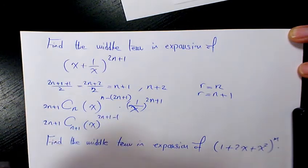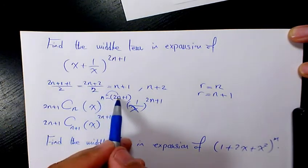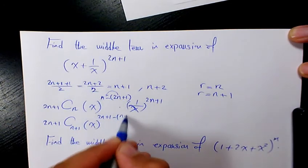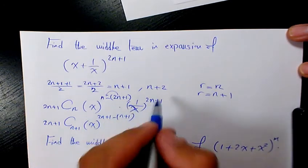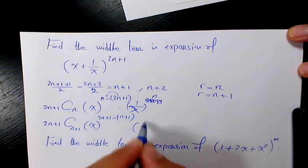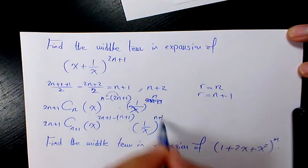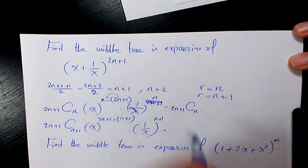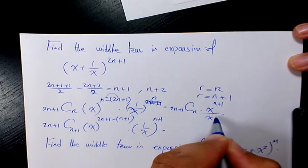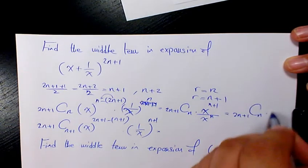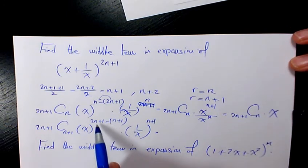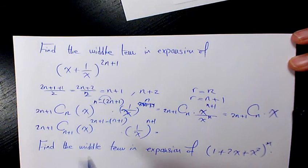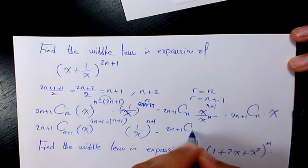Simplifying the first term: (2n+1)Cn · x^(n+1) · x^(−n) = (2n+1)Cn · x. For the second term: (2n+1)C(n+1) · x^(2n+1−(n+1)) · (1/x)^(n+1) = (2n+1)C(n+1) · x^n · x^(−(n+1)) = (2n+1)C(n+1) · (1/x). So the two middle terms are (2n+1)Cn · x and (2n+1)C(n+1) · (1/x).